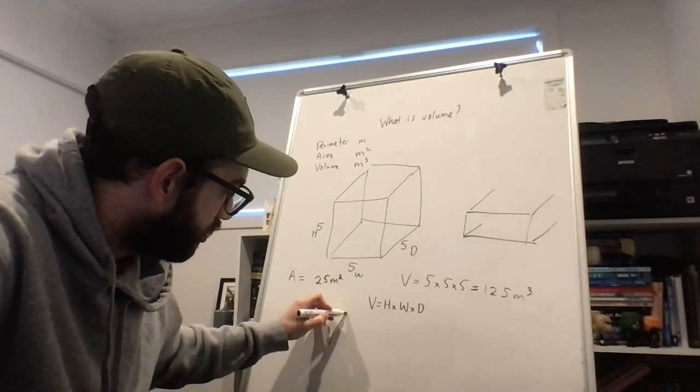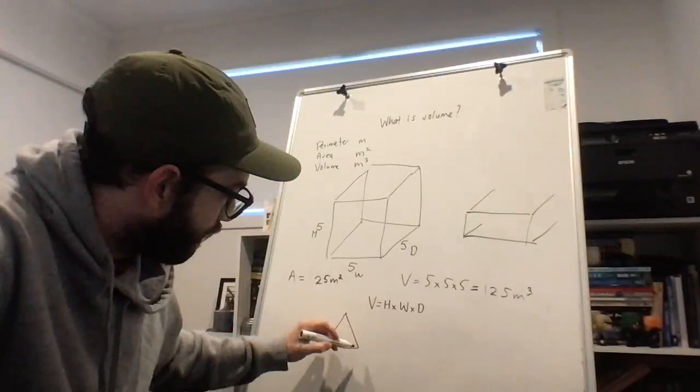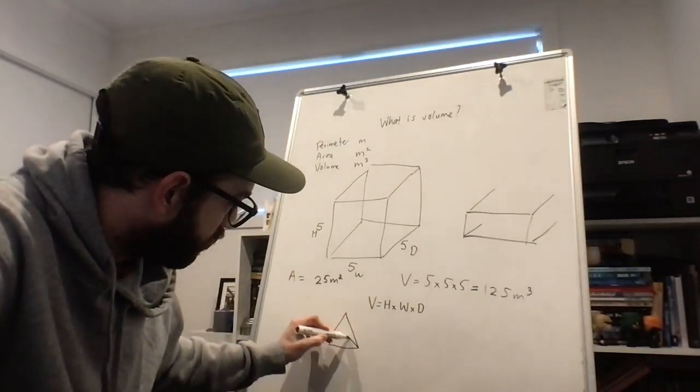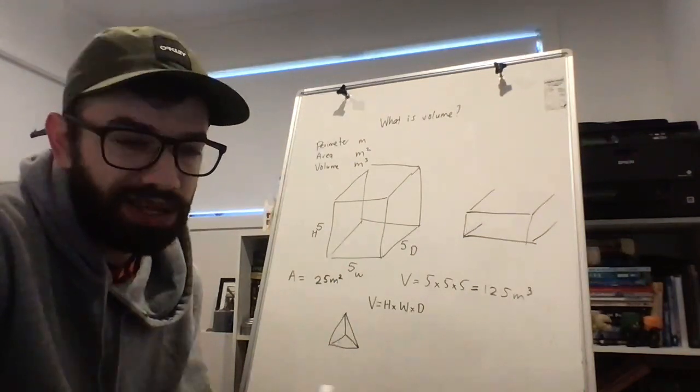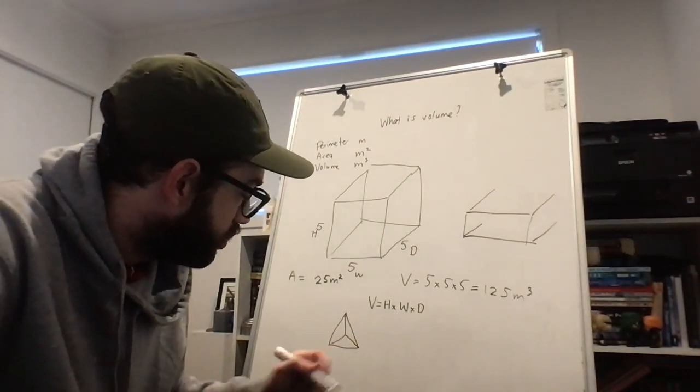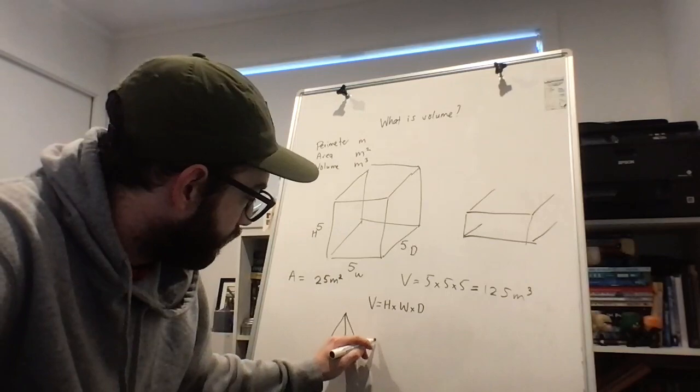Even if you were finding the area of a prism or a pyramid, for example, you would still use meters squared.